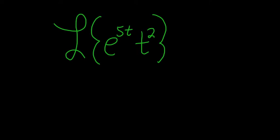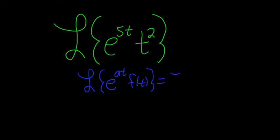Find the Laplace transform of e to the 5t times t squared. The formula we're going to use for this problem is called the first translation theorem. If you have the Laplace of e to the at times f of t, this is equal to the Laplace of f of t, and then there's a shift — the e goes away and you replace it with a shift from s to s minus a.